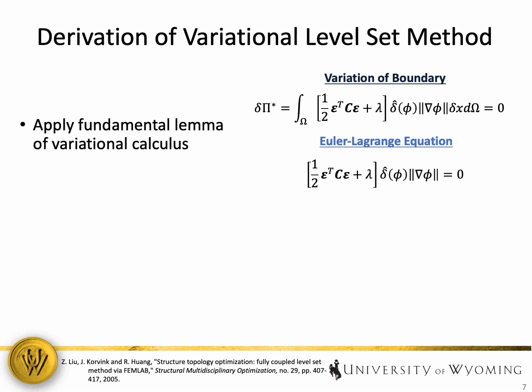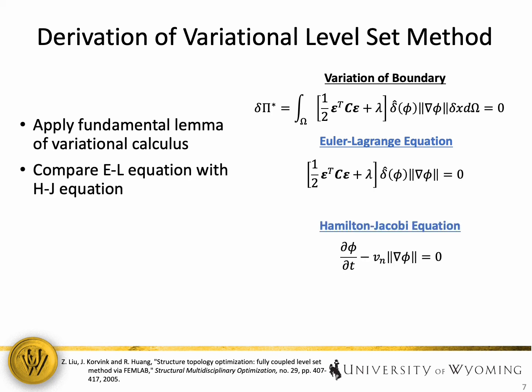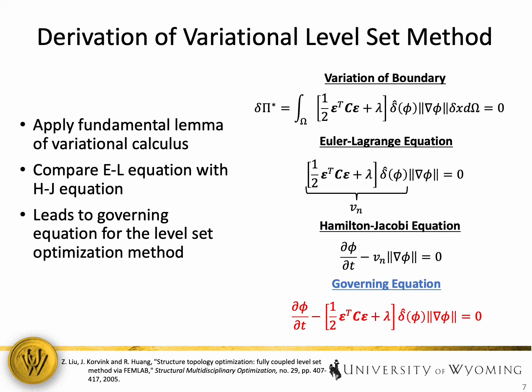Next, the fundamental lemma of variational calculus is applied to arrive at the Euler-Lagrange equation. Now if we compare this equation with the Hamilton-Jacobi equation, what you'll notice is that the term highlighted in orange represents the velocity field within the Hamilton-Jacobi equation. So if we substitute that in, we can arrive at the governing equation for the level set optimization method.